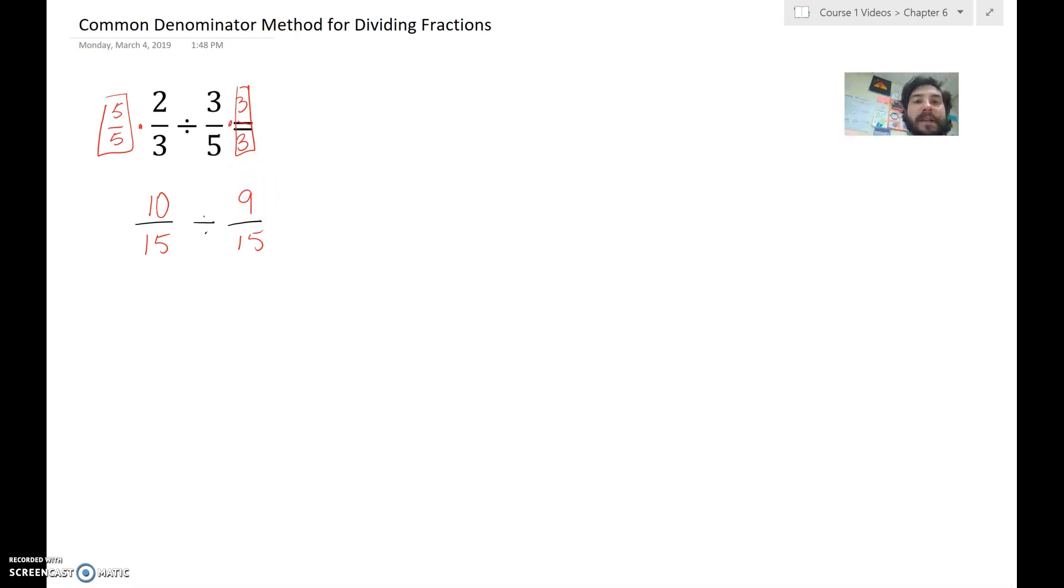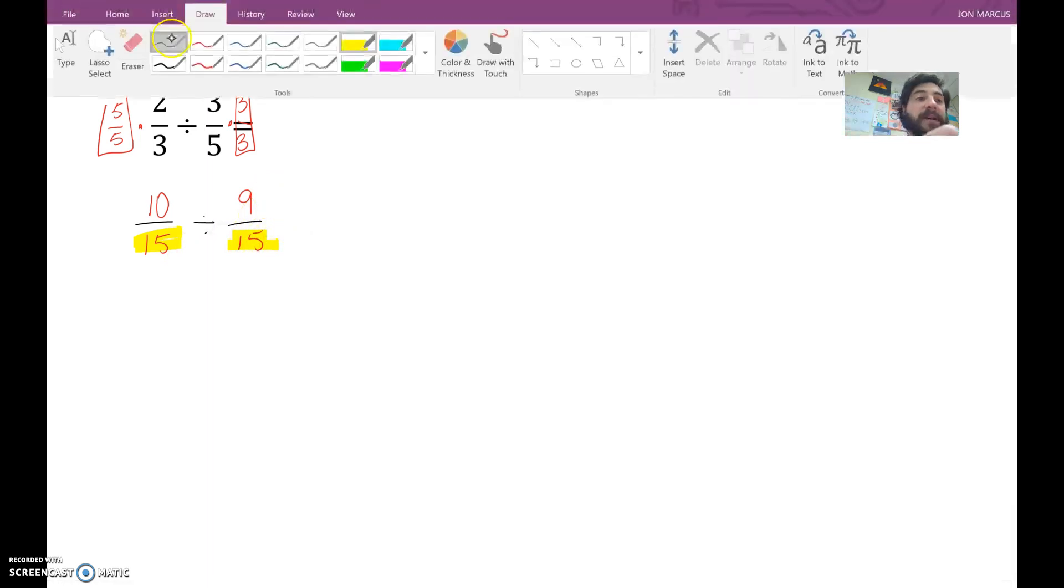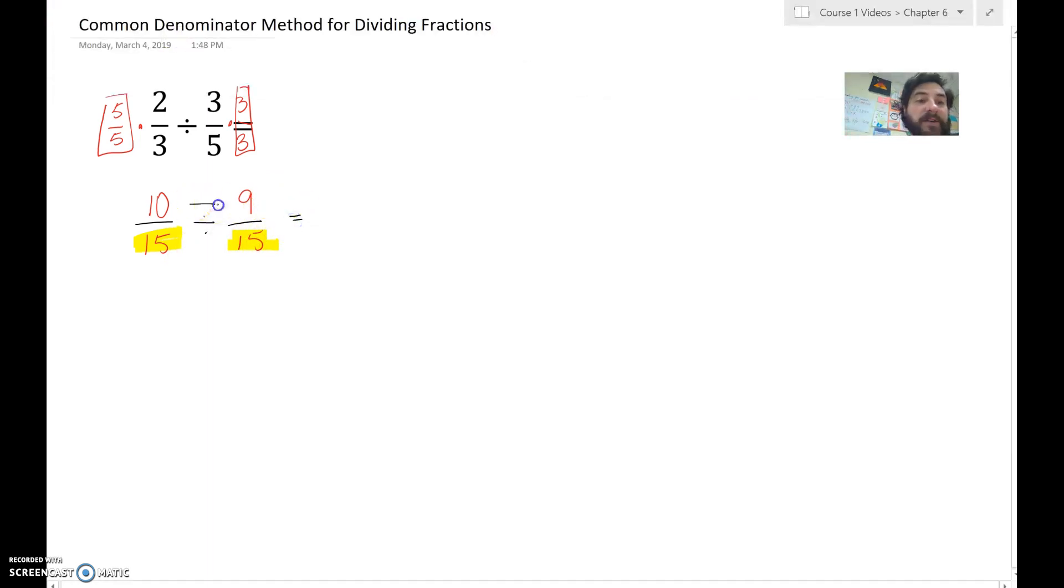Something really nice that happens here, now that we have common denominators, is when we go and divide straight across, because we can do that just like multiplying straight across, something really nice is going to happen on the denominator there. That when we do go ahead and divide straight across, what we end up with is 15 divided by 15 on the bottom, which is just equal to 1 on the bottom.